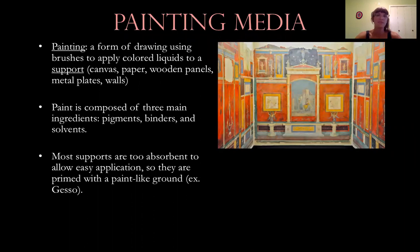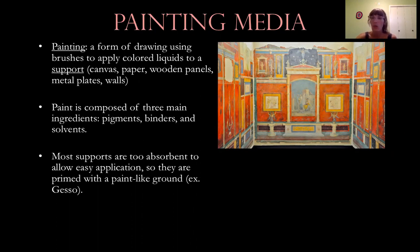So to start, what is painting? Well, you've already seen the drawing lecture. Painting is just a form of drawing using brushes to apply color liquid to a support. A support most commonly would be a canvas, but paint can also be applied on paper, wooden panels — for instance the Mona Lisa is on a wooden panel — metal plates, or of course walls. For walls, we can speak about fresco paintings.